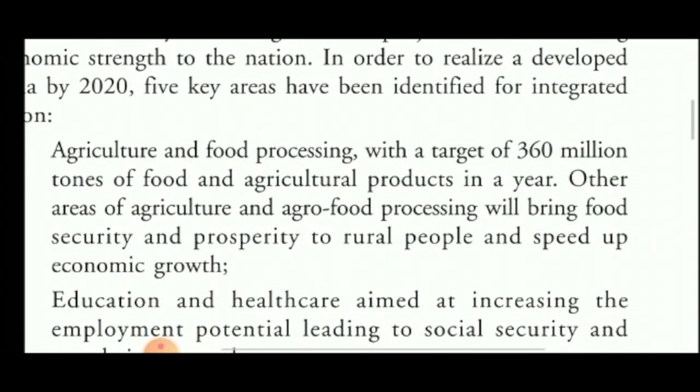The first of the five key areas is agriculture and food processing, with a target of 360 million tons of food and agricultural products in a year. Other areas of agriculture and agro-food processing will bring food security and prosperity to rural people and speed up economic growth. This will not only speed up the economic growth but will also lift up the life of rural people.